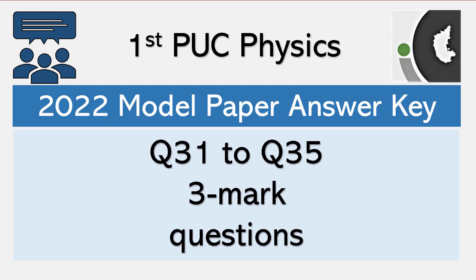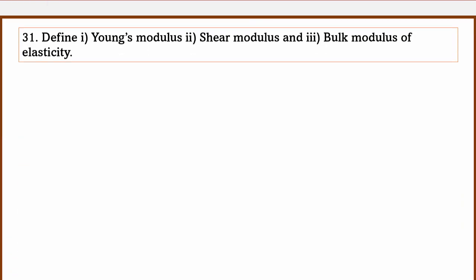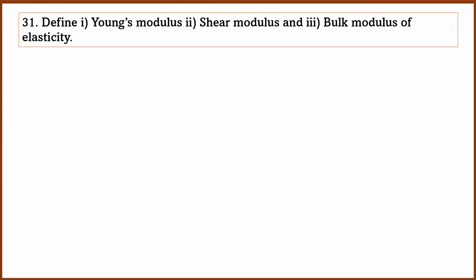Namaskara. This is the first PUC physics model paper. From question 30 to question 30-something, they are all 3 mark questions. The 31st question is about Young's modulus, Shear modulus, and Bulk modulus — define each modulus.